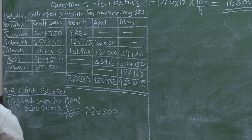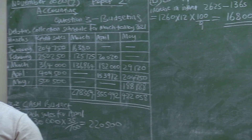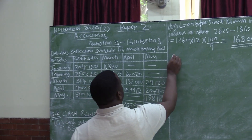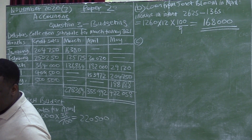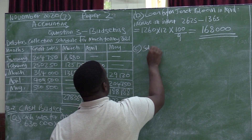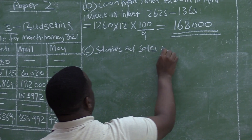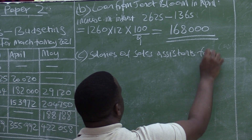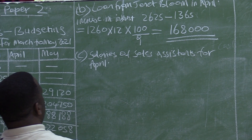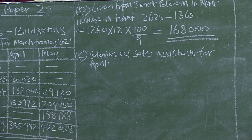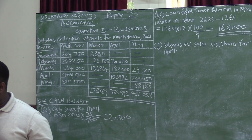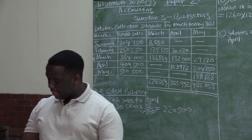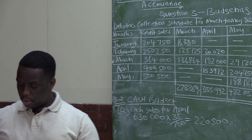We are continuing to calculate the missing amounts. The following one is C — alphabet C. We are required to calculate the salaries of sales assistants for April. The amount is not given; the only amount given is the salaries of sales assistants for March. The April amount is not given, so we need to refer to information E on page 10.